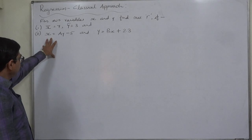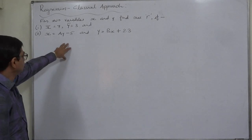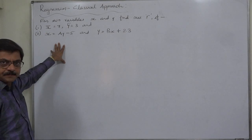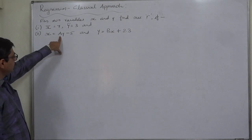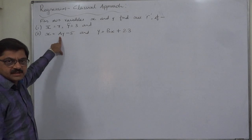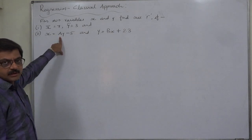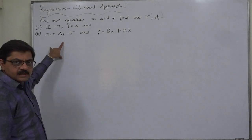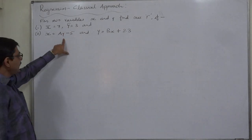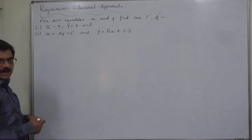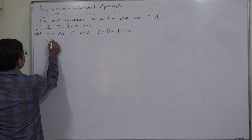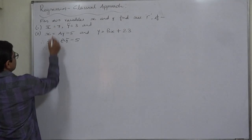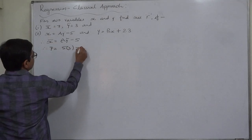This is the line of regression: x equals to ay minus 5. That means this is the line of regression of x on y, because the subject of the equation is x. First of all, in the place of the coefficient of regression it is alphabet 'a'. So first we need to find out the value of a. The technique is: if we substitute y-bar in the place of y, the result will be x-bar. That means x-bar equals to a into y-bar minus 5.